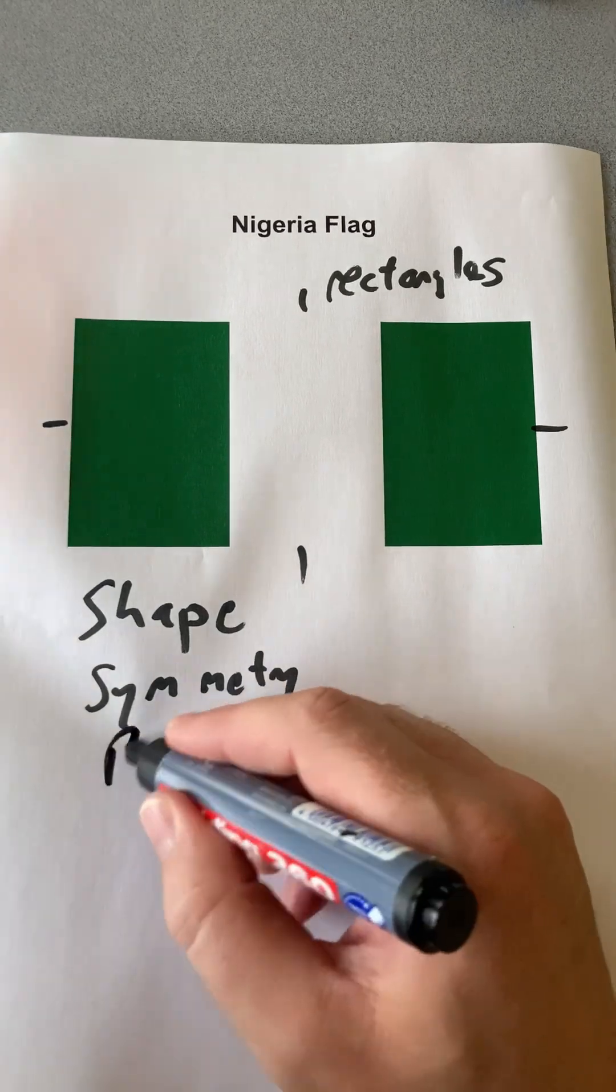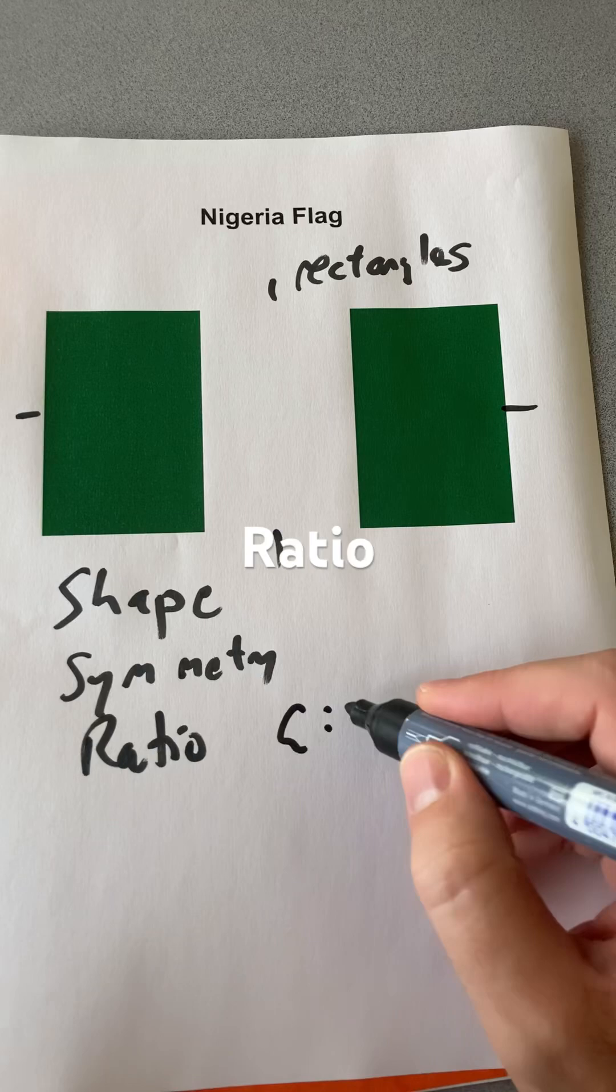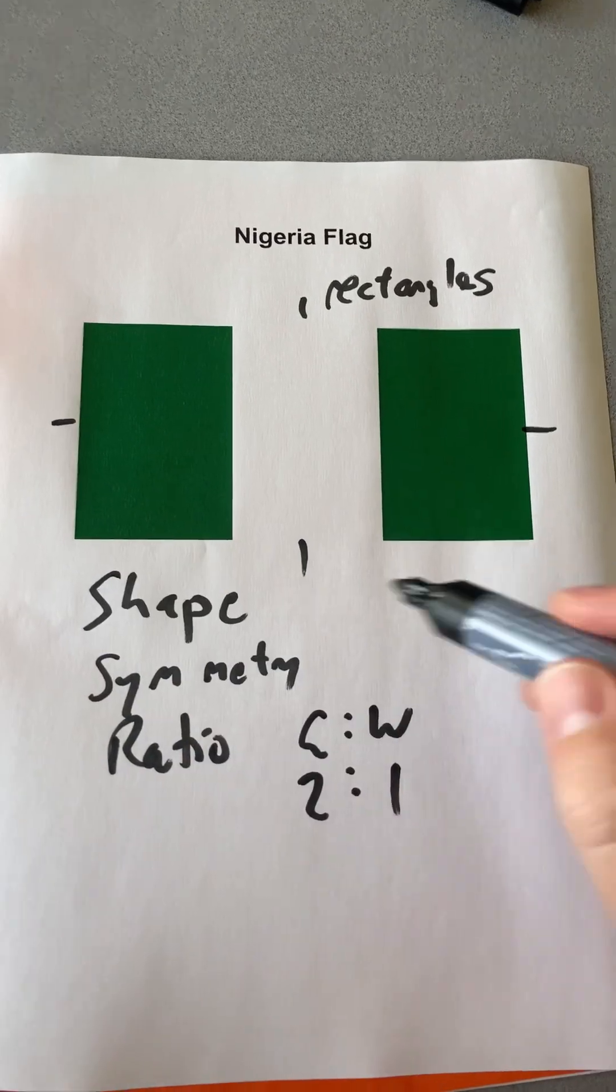Then we also have ratio with the green to white being two to one, and also ratio of the length to the width.